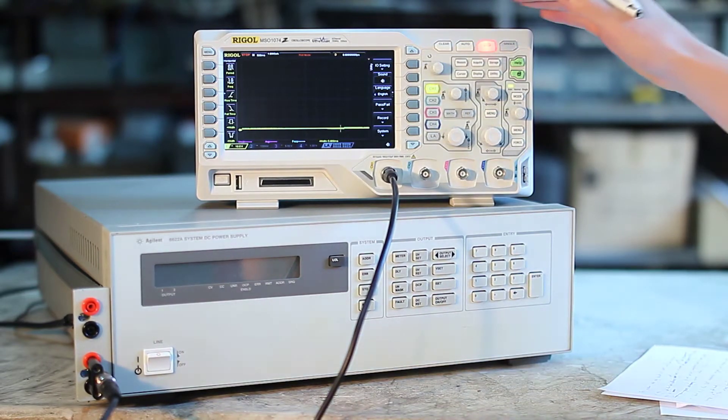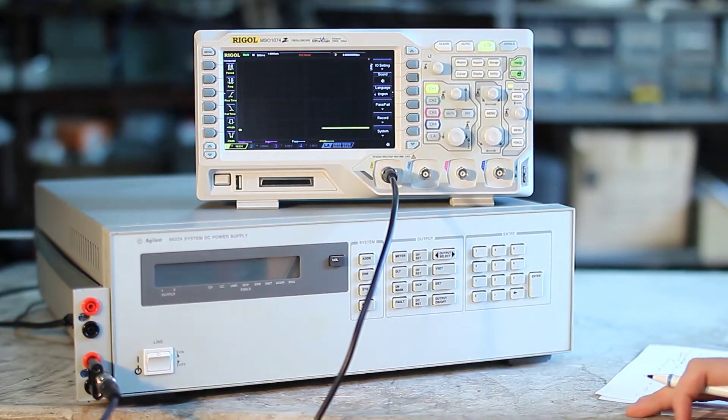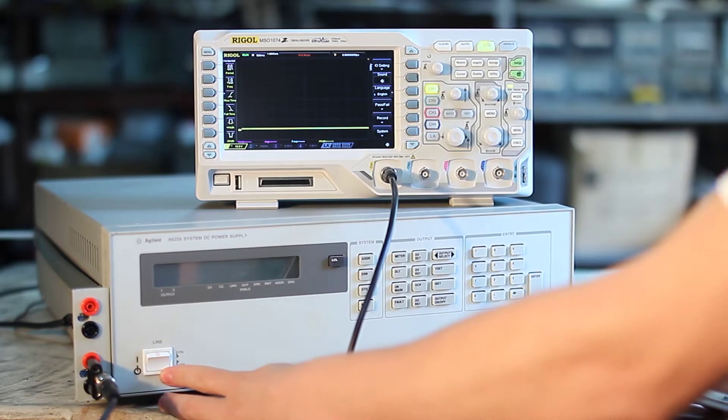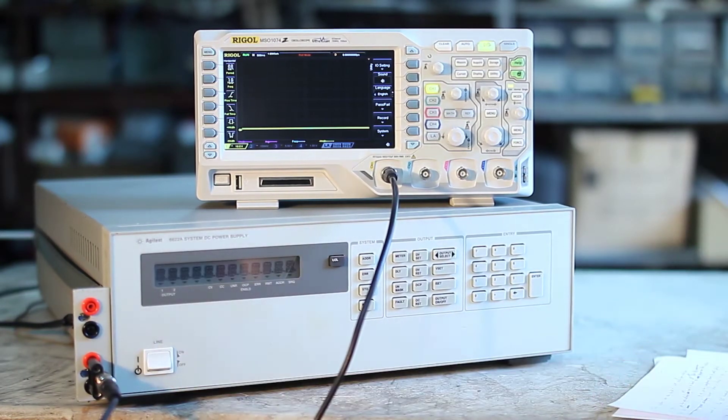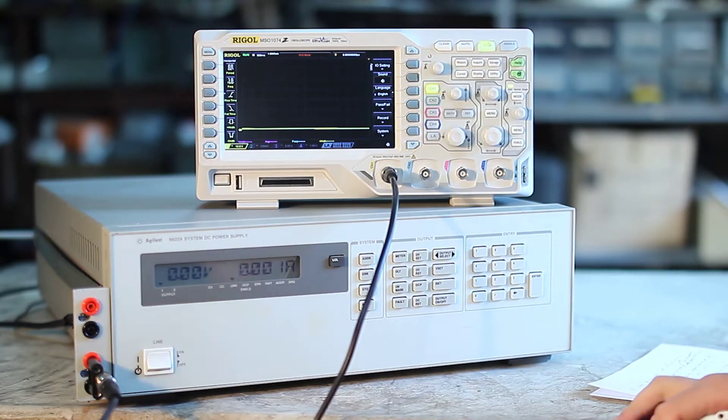So first let's put in the scope, in roll mode, and hook it to channel 1 of the supply. Now let's power on the power supply. As we can see, everything seems to work fine.